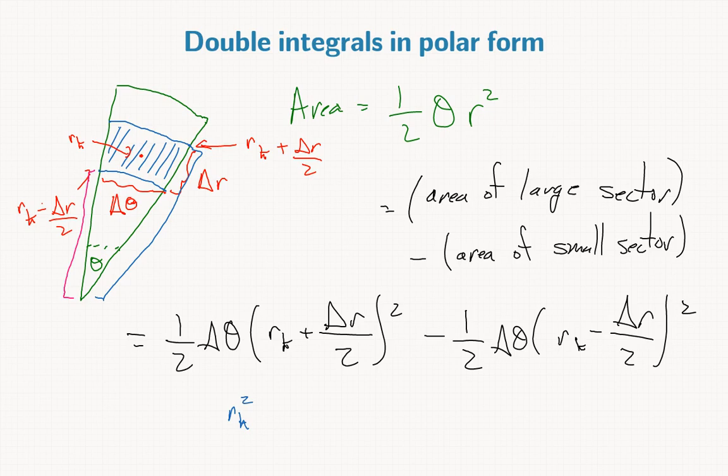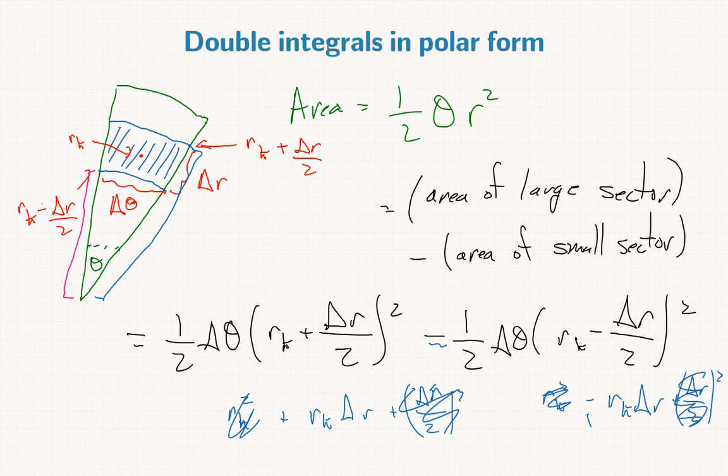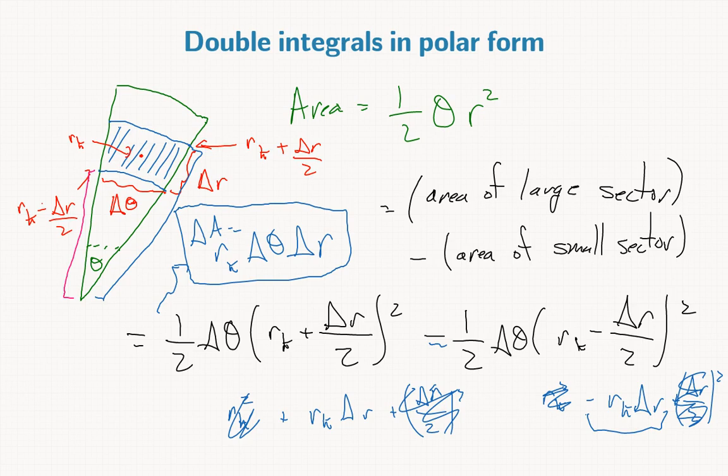We expand as usual: r_k squared plus r_k delta r plus (delta r over 2) squared, and then r_k squared minus r_k delta r plus (delta r over 2) squared. Since we're subtracting these, these guys will cancel, and this one will be doubled. So we end up with just r_k delta theta delta r as our expression for the area of the kth polar rectangle.